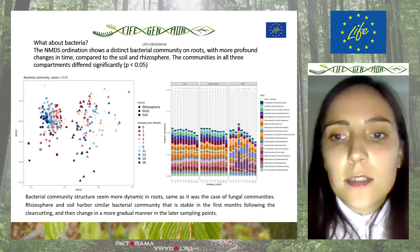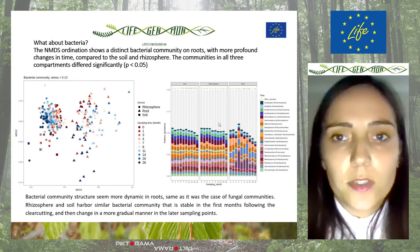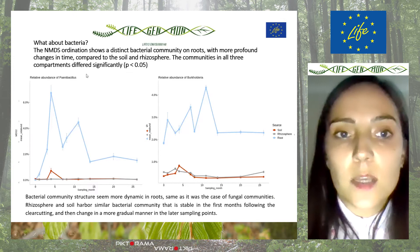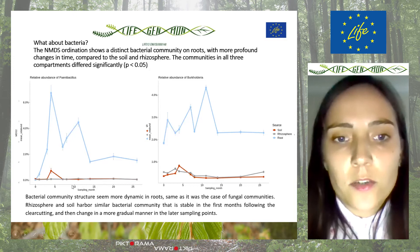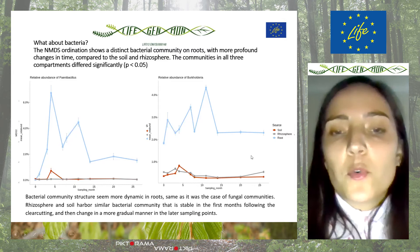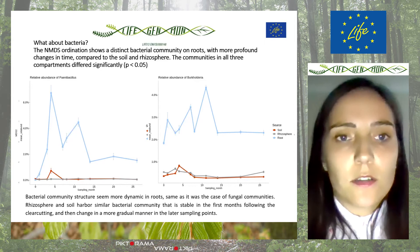This can be confirmed by looking at specific taxa separately, like Paenibacillus or Burkholderia, and their average relative abundance, which was higher in the roots — shown in blue — compared to rhizosphere and soil. This points to their importance and possible involvement in the decomposition of root litter alongside fungi.